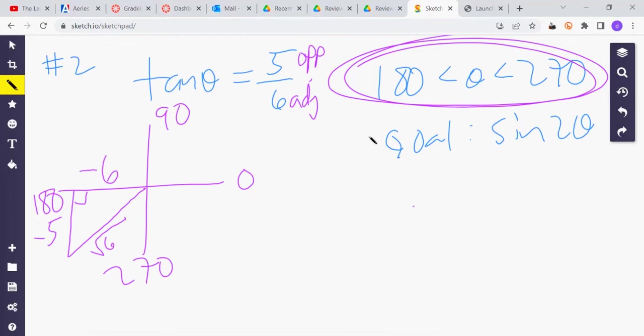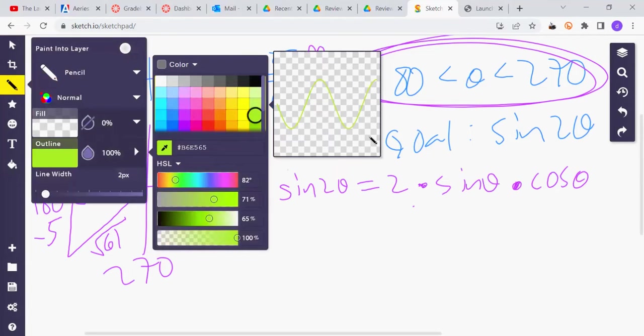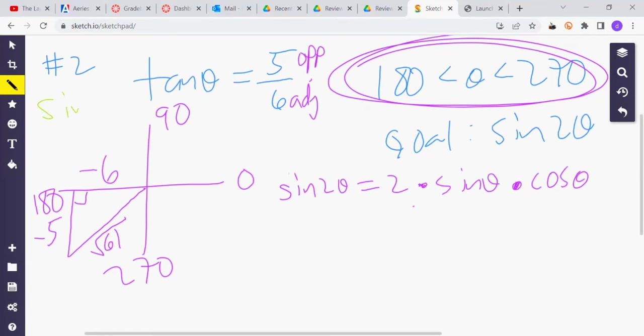Right, the goal is the sine of 2 theta. So by our cheat sheets, by our trig IDs, we know that sine of 2 theta is 2 times sine times cosine. So, a timeout, let's find here in green, let's find the sine of theta.